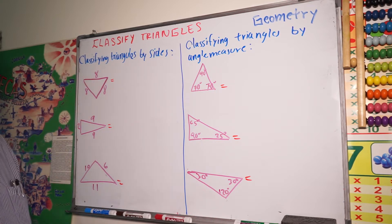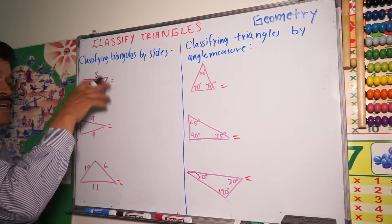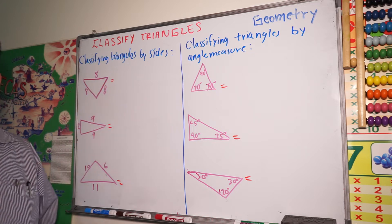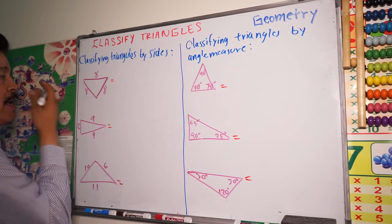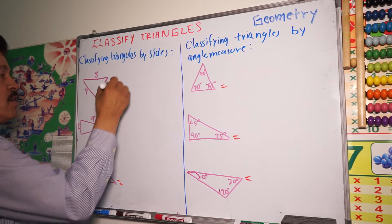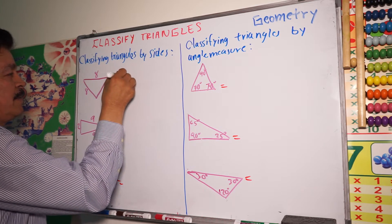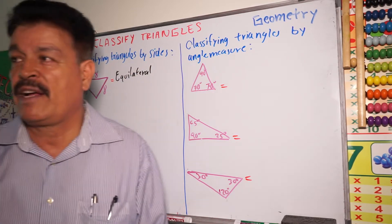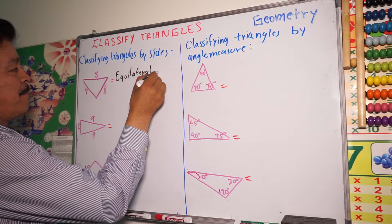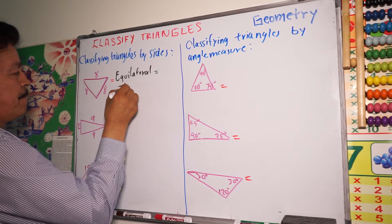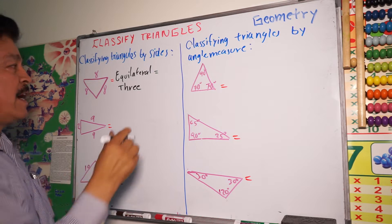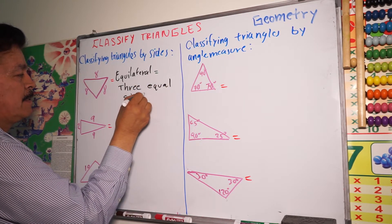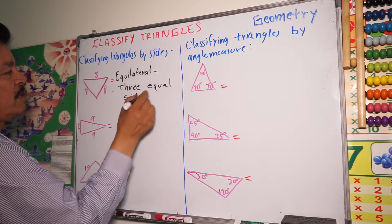In the first case, classified triangles by size. We have one triangle like this — for example, this triangle has sides of eight, eight, eight. All sides are equal. This triangle is called equilateral. The equilateral triangle has three equal sides.